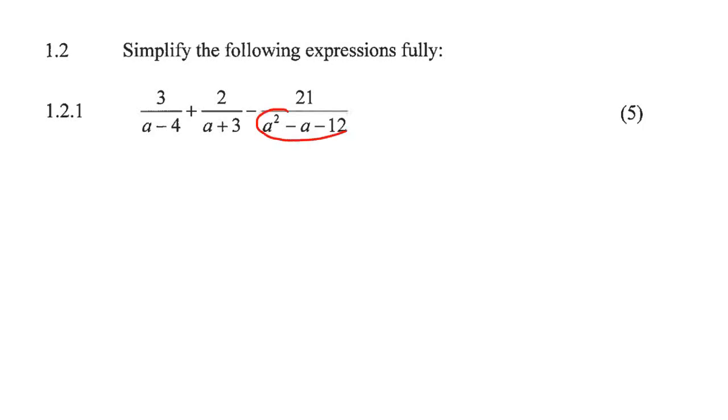So this one needs to still be factorized. That one can be factorized as a trinomial. So that would become two different brackets and then it would be a minus four and a plus three. Because if you had to go work this out and multiply those out again, you would see that it gives us that over there.